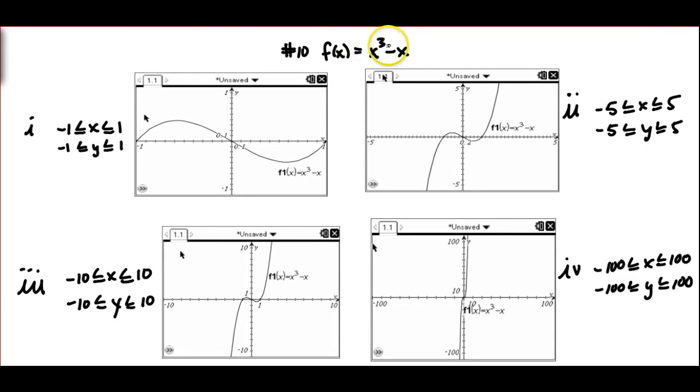So here's the equation again, x cubed minus x. When I graphed it with a negative 1 to 1, I got this graph. From negative 5 to 5, see how the graph changed. And simply what happened was we looked at a bigger portion of the graph. So we were able to see more of the graph's behavior. Similarly for this one, when we went negative 10 to 10, we can clearly see what the graph is doing.